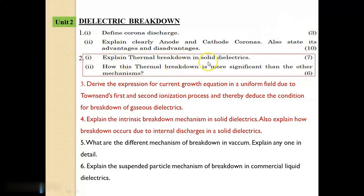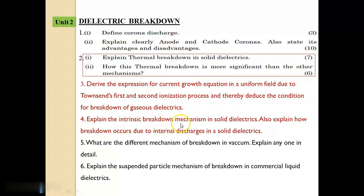Question No. 2: Explain thermal breakdown in solid dielectrics (7 marks). Also, how is thermal breakdown more significant than the other mechanisms (6 marks)? Question No. 3: Derive the expression for current growth equation in a uniform field due to Townsend's first and second ionization process, and thereby deduce the condition for breakdown of gaseous dielectrics. Question No. 4: Explain the intrinsic breakdown mechanism in solid dielectrics, and also explain how breakdown occurs due to internal discharges in solid dielectrics.